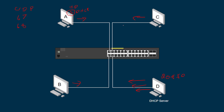Each device responds with step three — a Request: 'I want what you're offering, I want that IP address.' Each one sends back that Request. The DHCP server receives those requests and in step four sends back an Acknowledgment, then registers and puts the IP addresses into its database. So now each device will get an address — say 192.168.40.2, .3, .4 — and that is how DHCP works.